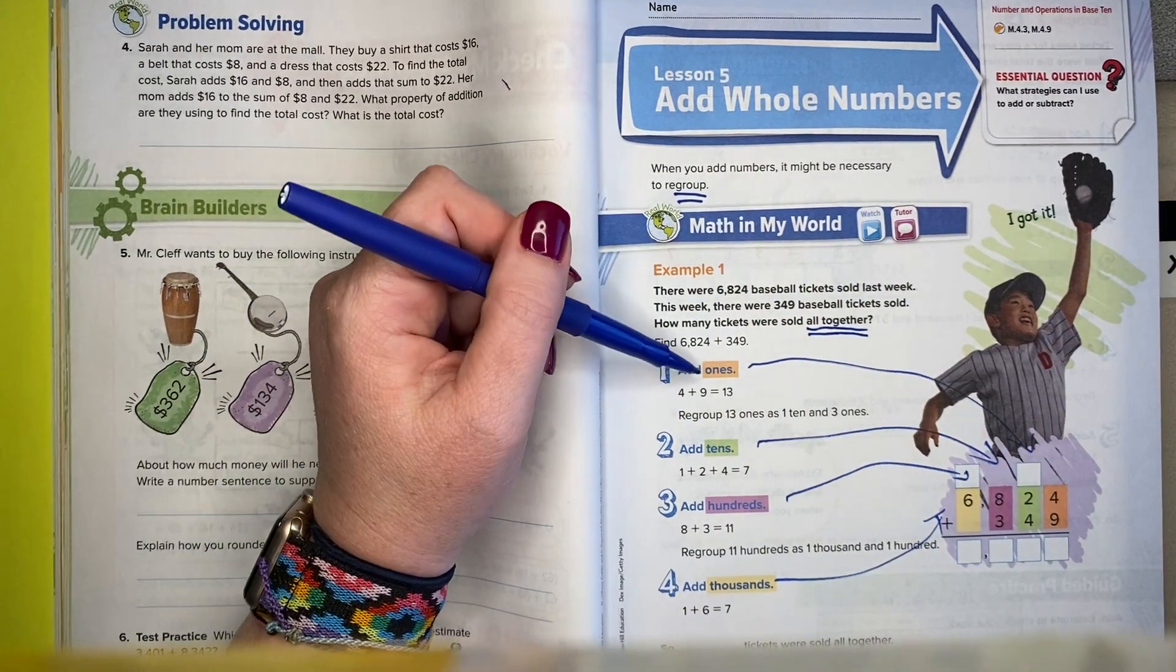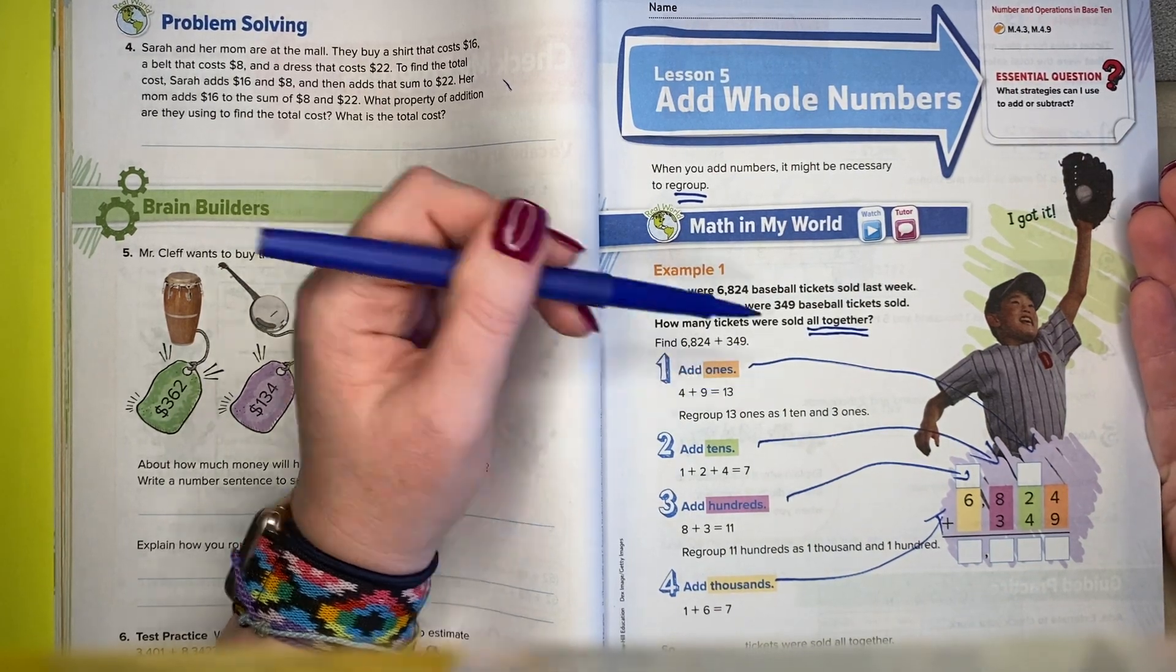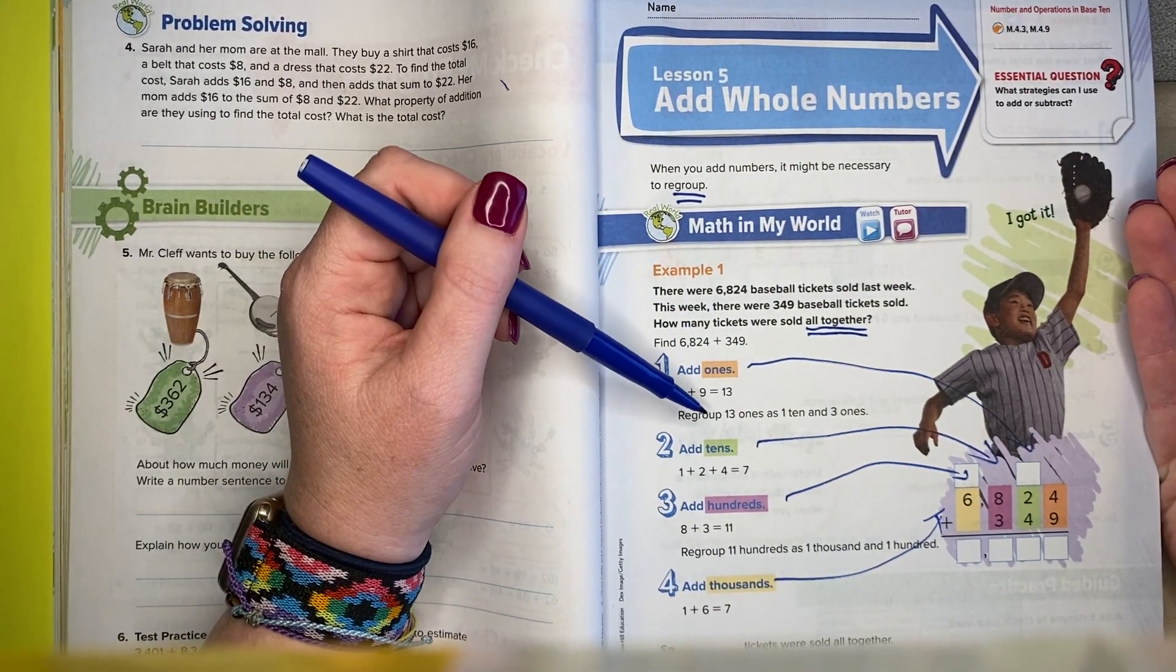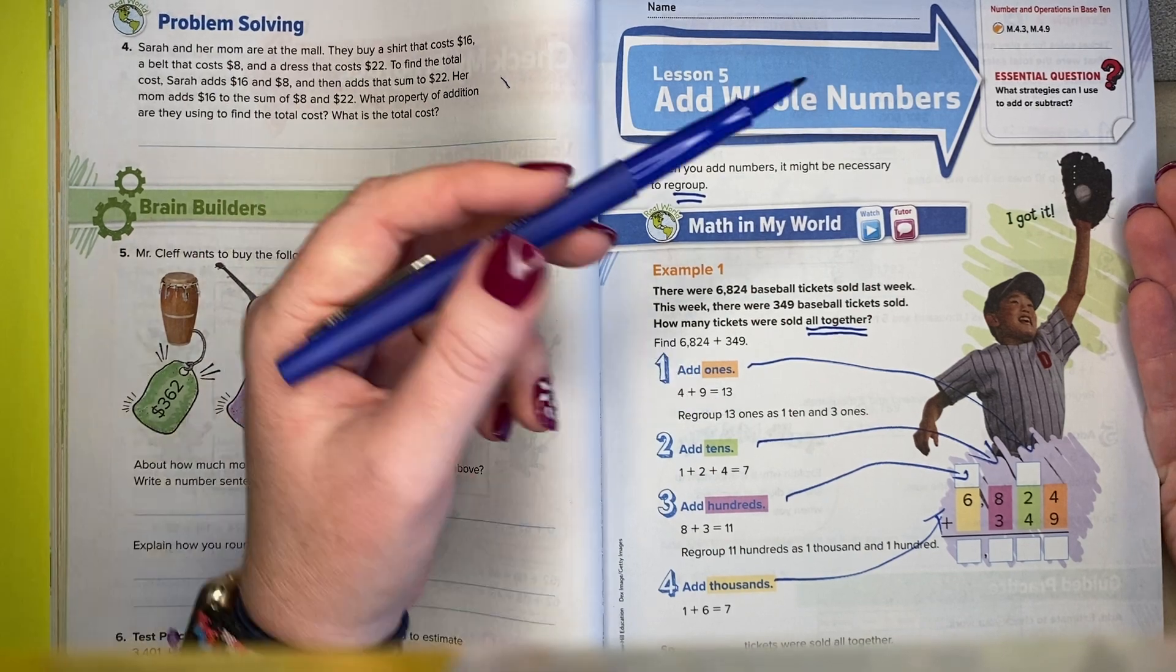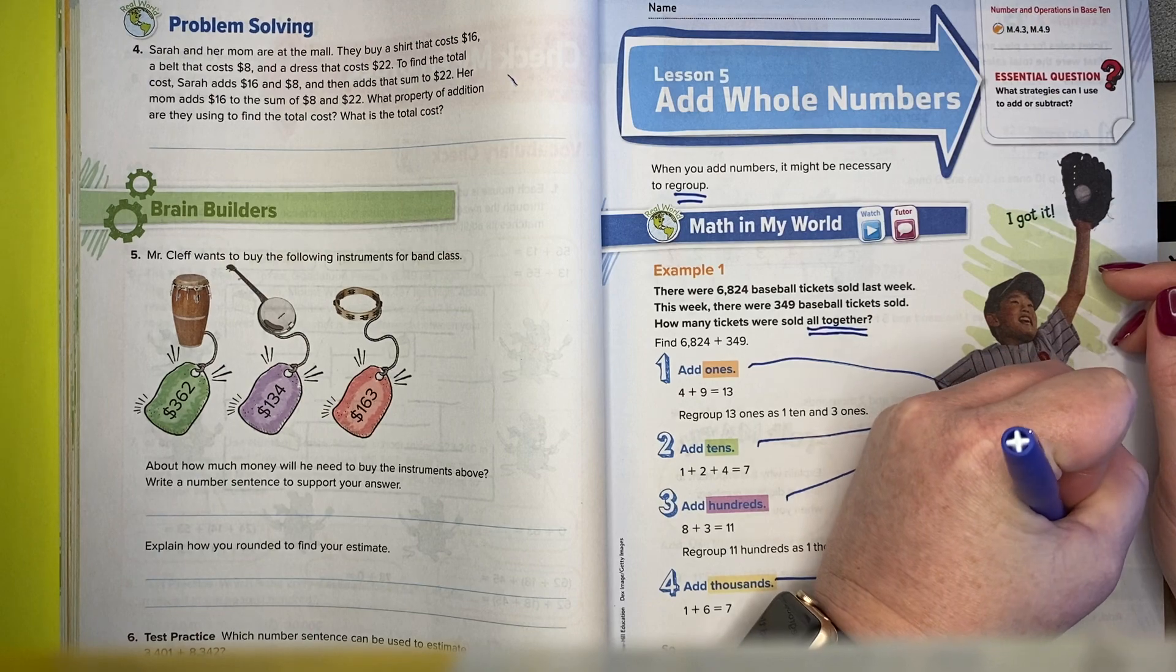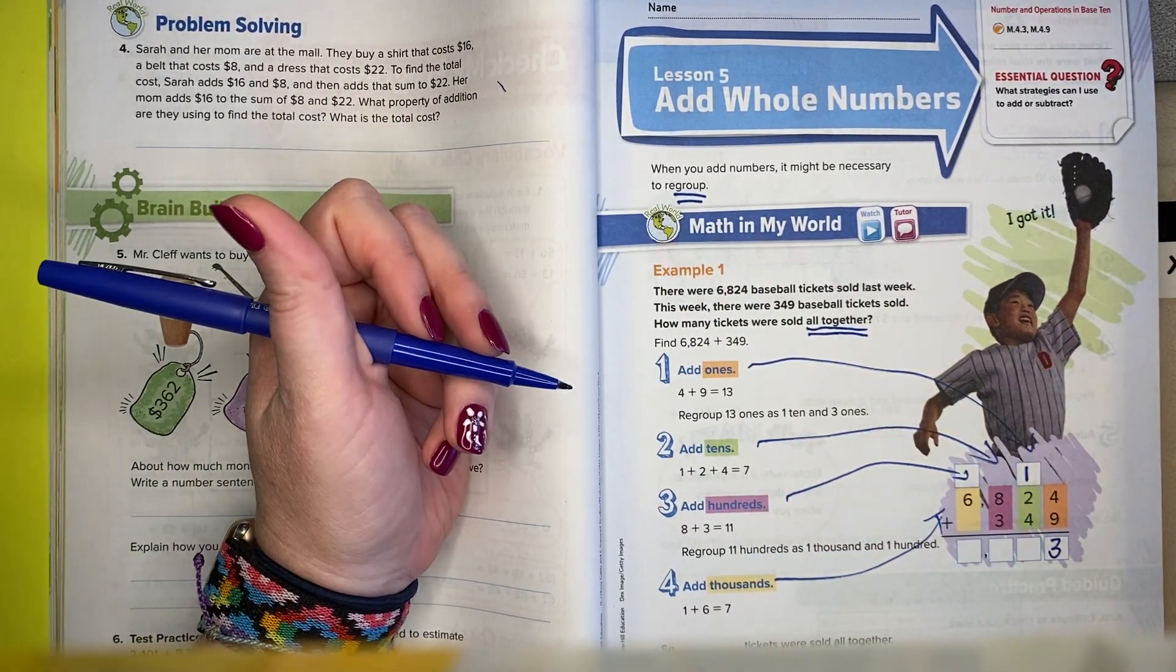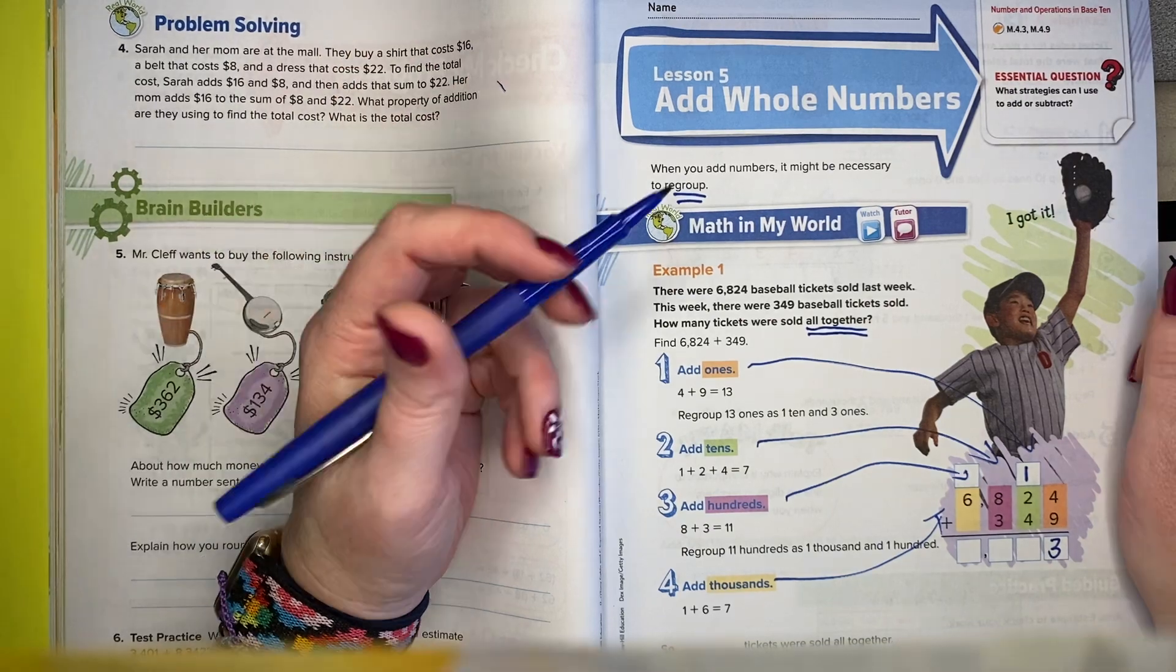So my first step is to add the ones. They say 4 plus 9 is 13. They went ahead and told us. So I'm going to regroup 13 as 1 ten and 3 ones. I'm going to put the 10 up here and 3 ones is going to go down here. I think you already know that, but if you don't, there's a review.